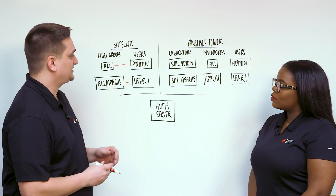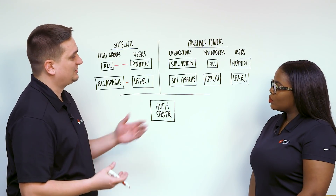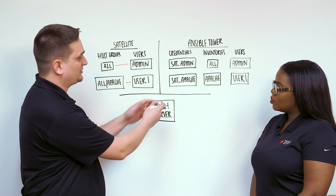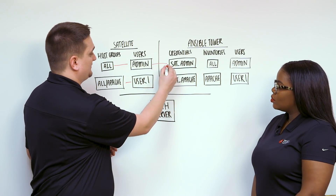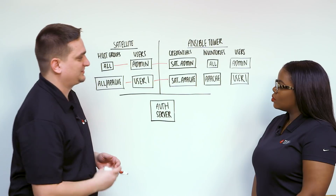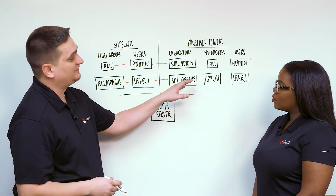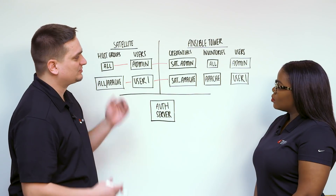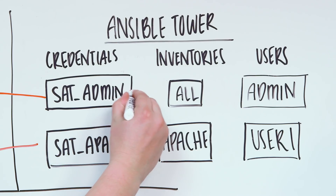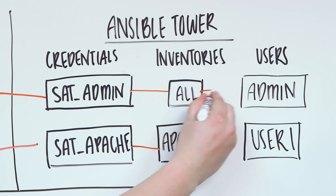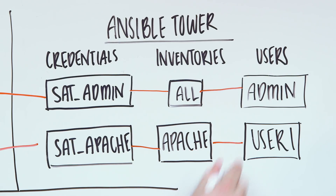Next we're going to mirror this configuration on our Ansible Tower side. We're going to establish a set of credentials that give us that communication we were just discussing. Once those credentials are established, we're going to create inventories that match this host group structure. Then we're going to associate Tower accounts for an admin and user one so they can access their inventories and have the ability to connect all the way through the workflow.